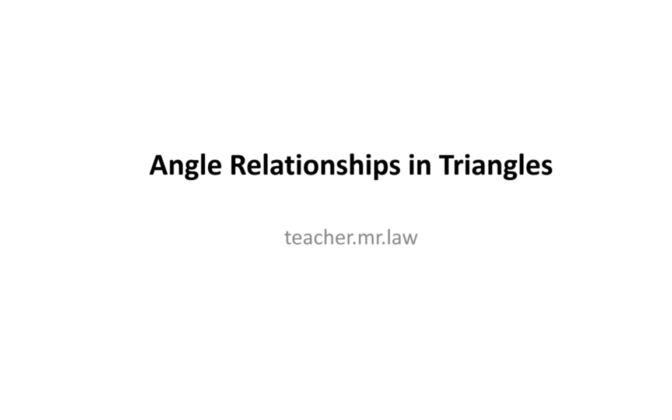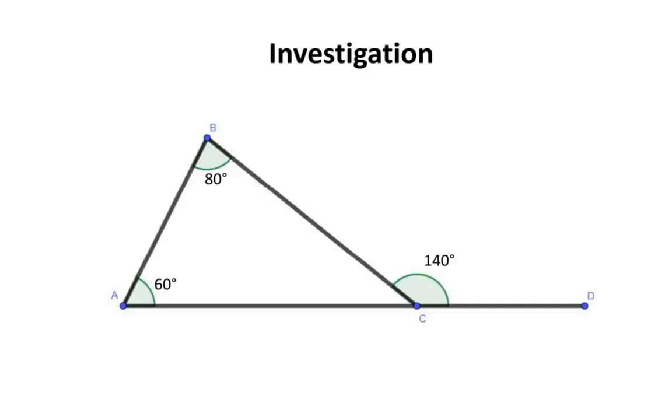In today's lesson, we'll be learning about angle relationships in triangles. In this diagram of a triangle, two interior angles are labeled as well as one exterior angle. We want to know if there is a relationship between these two interior angles and this one exterior angle.